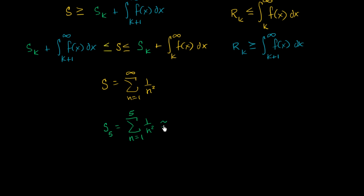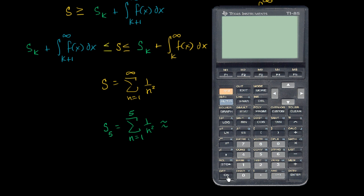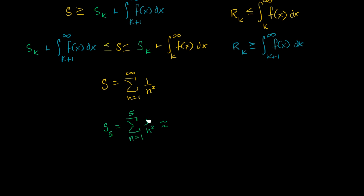Let's calculate s sub five. This equals one over one squared, which is one, plus one over two squared, which is one fourth, plus one over three squared, which is one ninth, plus one over four squared, which is one sixteenth, plus one over five squared, which is one twenty-fifth. Using a calculator, this comes out to approximately 1.464.